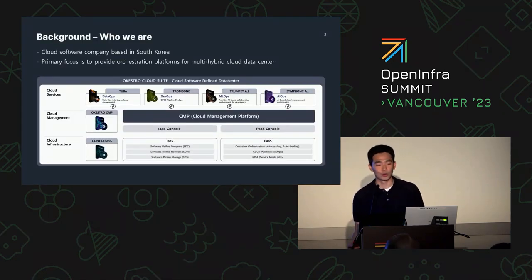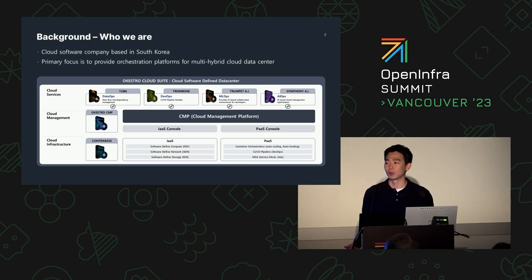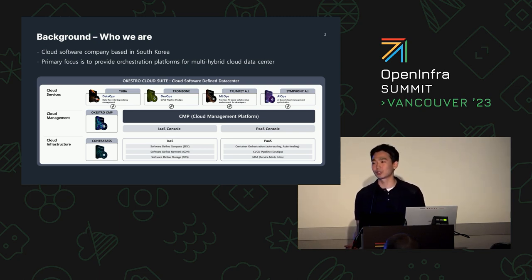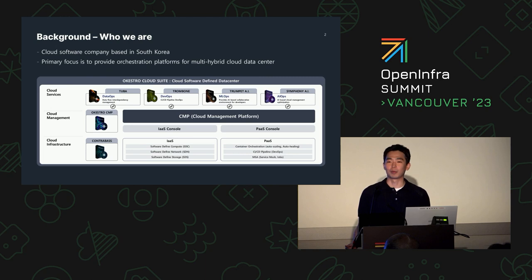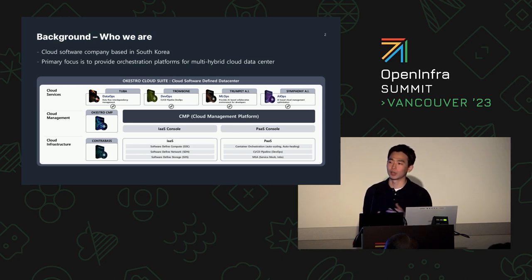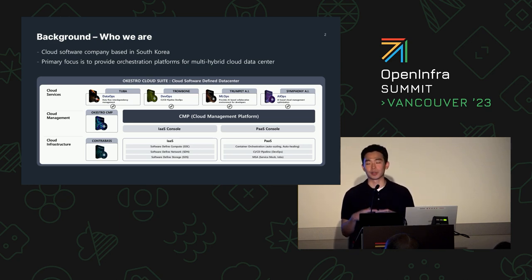So who are we? Ocastro is a software company based in Seoul, South Korea. We provide a full stack of cloud solutions to our clients so that they can deploy their own cloud data center. We don't have our own data center, nor are we a cloud service provider. Our clients are major data centers within a conglomerate — they're IT managers — and utilizing our cloud software, they provide IT services within their conglomerate.